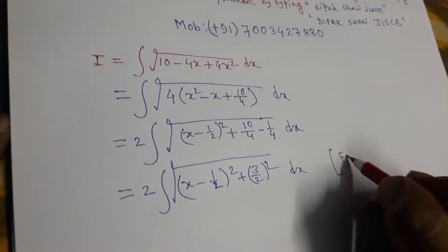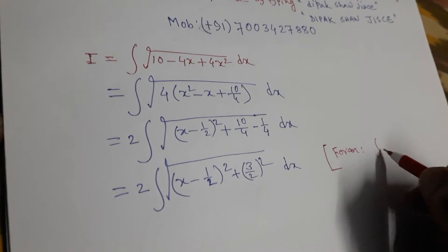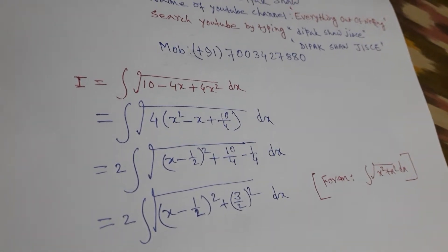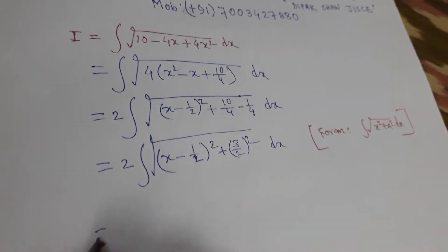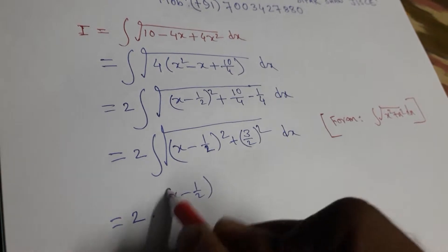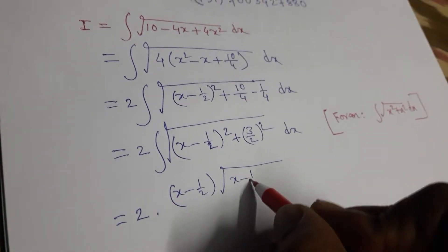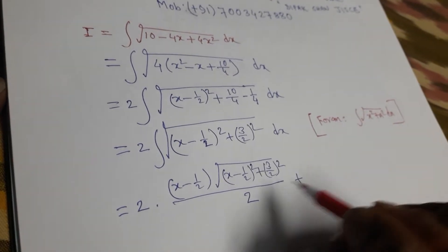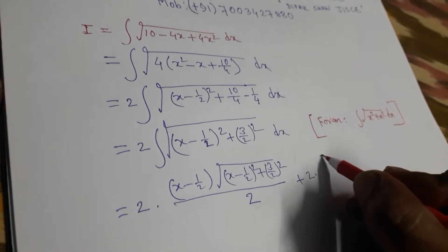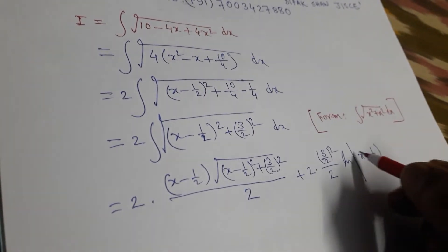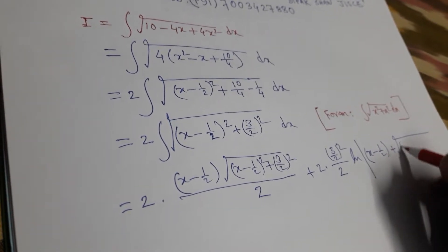The standard form we use is: integration of √(x² + a²) dx. Applying this formula, with x replaced by (x - 1/2) and a = 3/2, we get (x - 1/2) multiplied by √[(x - 1/2)² + (3/2)²].